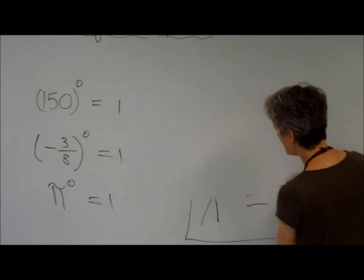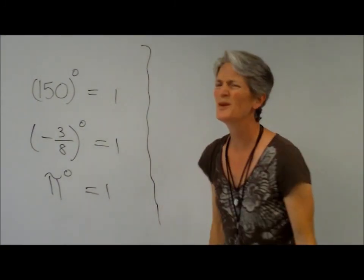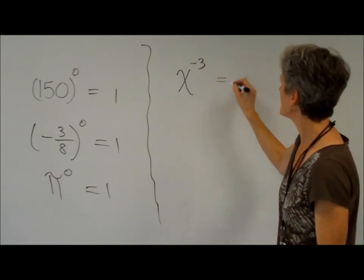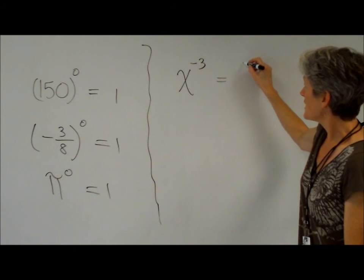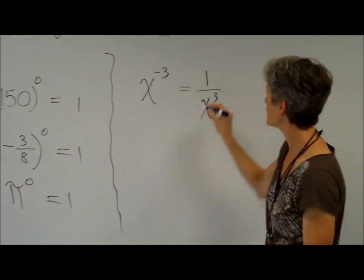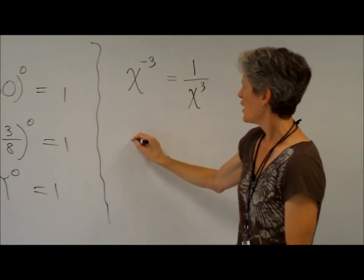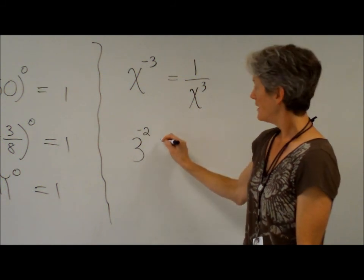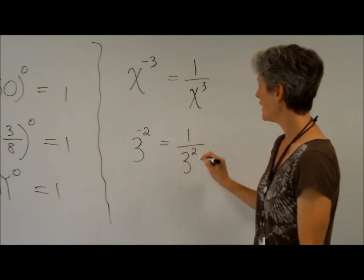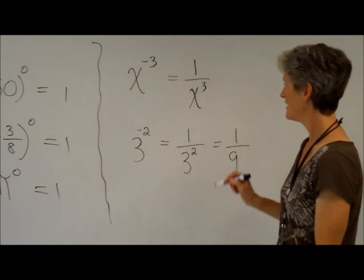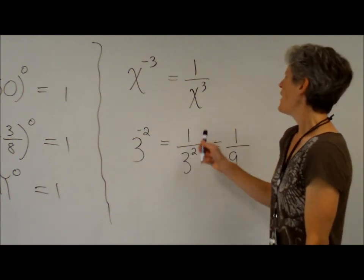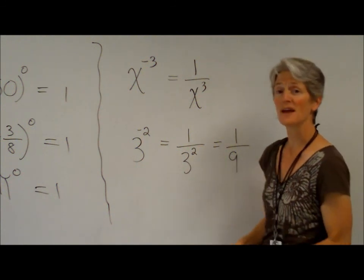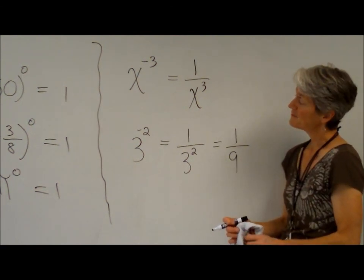There are a couple of other funny ones. When you have a negative exponent — like x to the negative 3 — that means the same as 1 over x to the 3rd. You can reciprocate it and make the power positive. Like 3 to the negative 2 is really 1 over 3 squared, which is 1 over 9. You can't leave it as 1 over 3 squared because that wouldn't be considered fully simplified — whenever you're doing math, you want to fully simplify things.